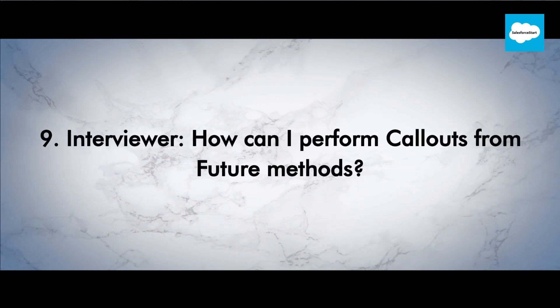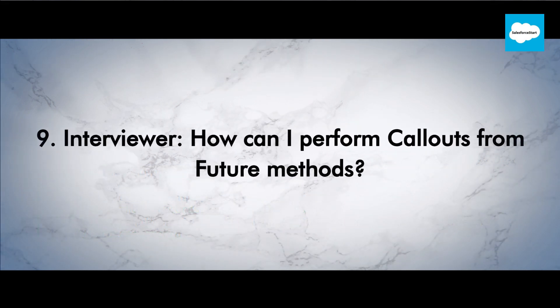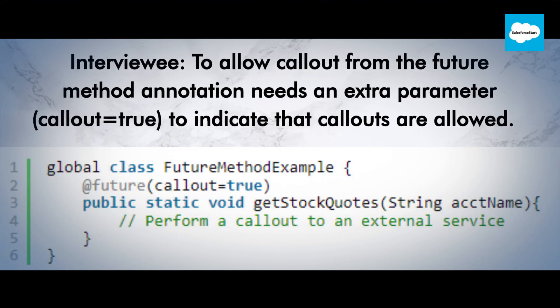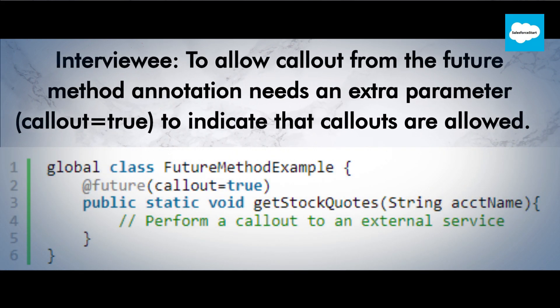Interviewer: How can I perform callouts from future methods? Interviewee: To allow callouts from the future method, the annotation needs an extra parameter — callout equals true — to indicate that callouts are allowed.